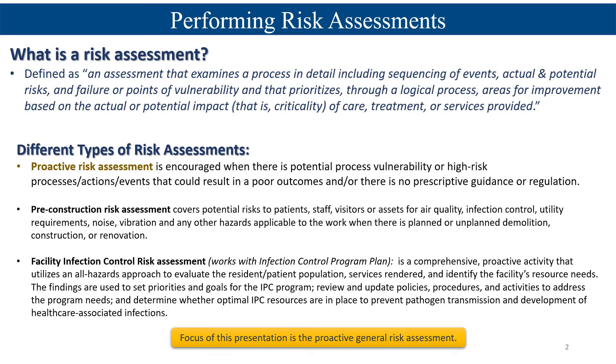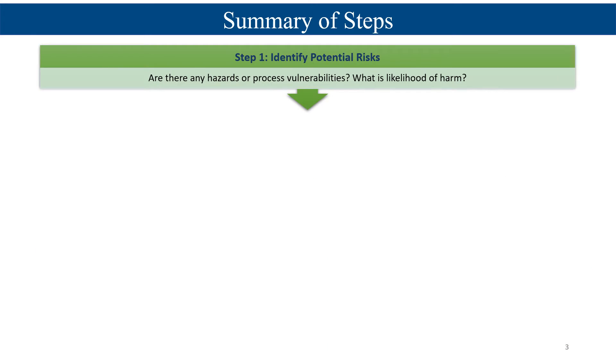The focus of this presentation is that proactive general risk assessment. So once you've described your process, action, or event that you're going to be looking at, the first step is to identify any potential risks. What are the potential hazards or process vulnerabilities? Any failure points? What is the likelihood of harm if this action, event, or process were to occur?